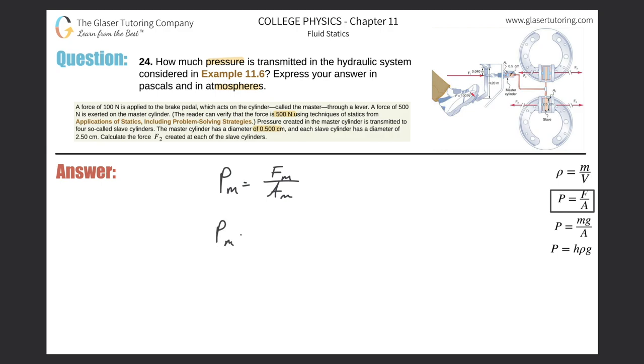Remember, the pressure at the master cylinder is equal to the pressure transmitted throughout the whole system. It's equal to the force applied to the master cylinder, which was 500 newtons, divided by the area. So it's a cylinder, right? So the surface area is the area of a circle, so we're going to be dealing with pi r squared here.